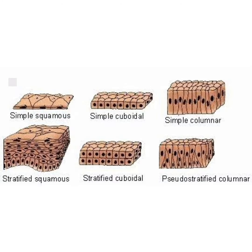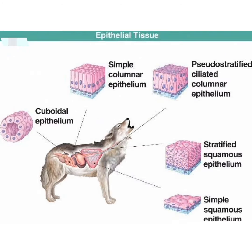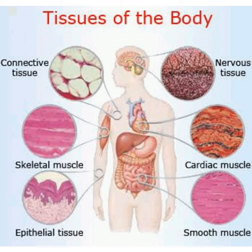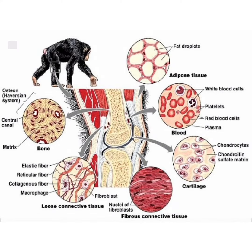Next, muscular tissues. Each type of muscle tissue in the human body has a unique structure and a specific role. Skeletal muscle moves bones and other structures. Cardiac muscle contracts the heart to pump blood. Smooth muscle tissue forms organs like the stomach and bladder, changing shape to facilitate bodily functions.